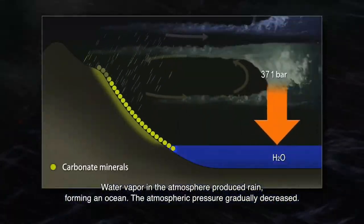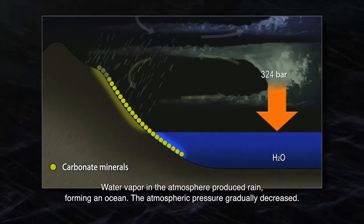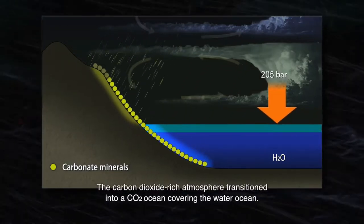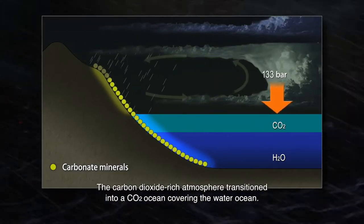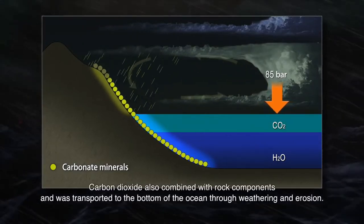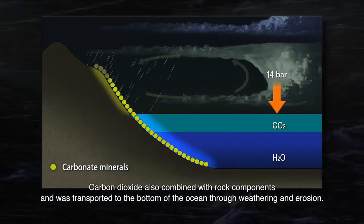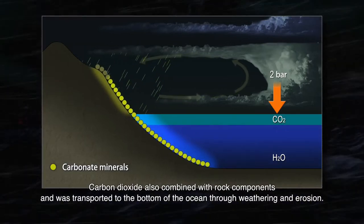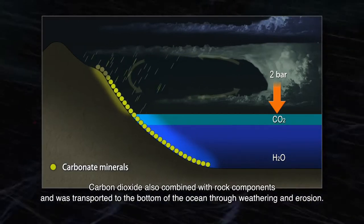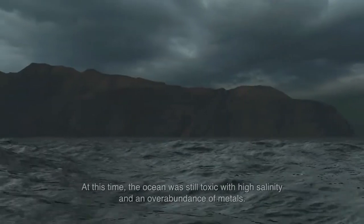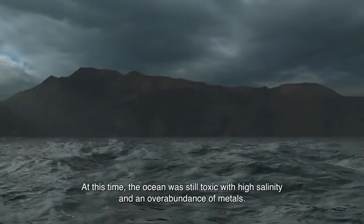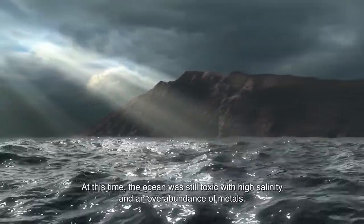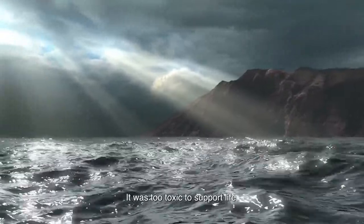The atmospheric pressure gradually decreased. The carbon dioxide-rich atmosphere transitioned into a CO2 ocean covering the water ocean. Carbon dioxide also combined with rock components and was transported to the bottom of the ocean through weathering and erosion. At this time, the ocean was still toxic with a high salinity and an overabundance of metals — too toxic to support life.